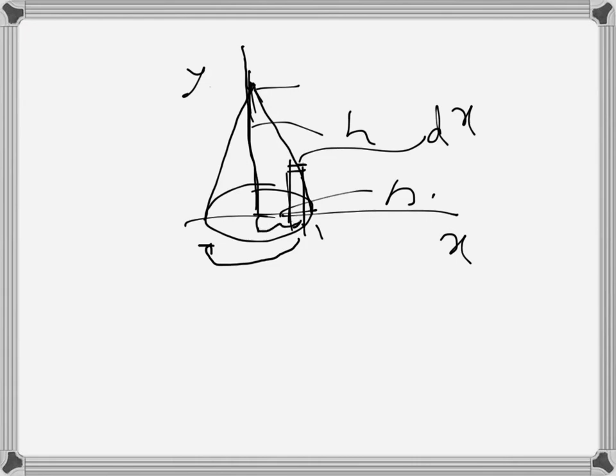The distance, the radius, is x. The height in this case is y. At any point, if we think about this straight line, any point is y here.